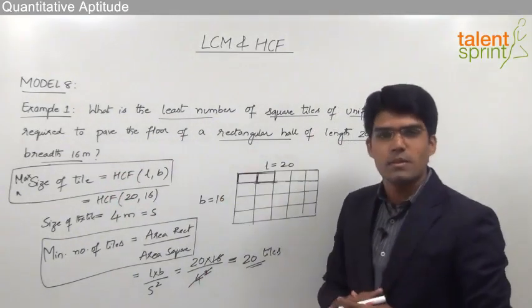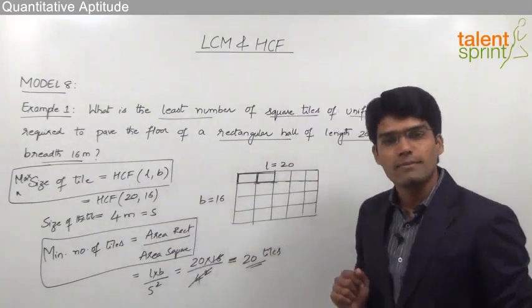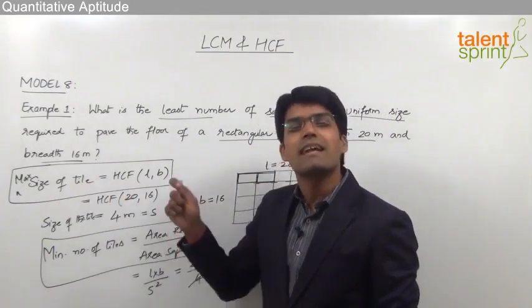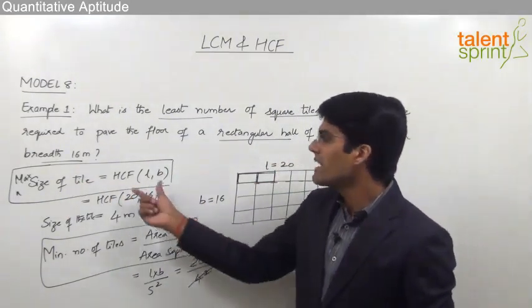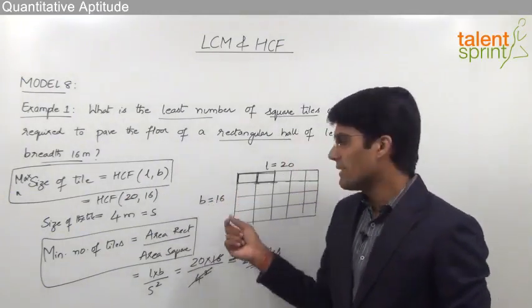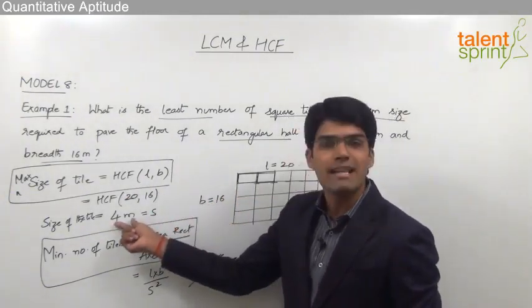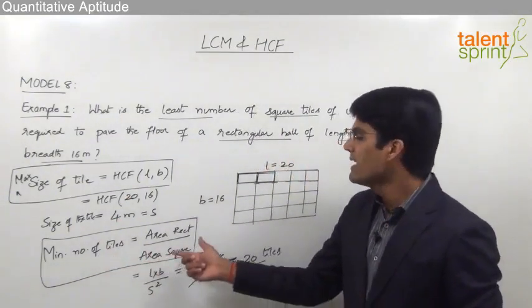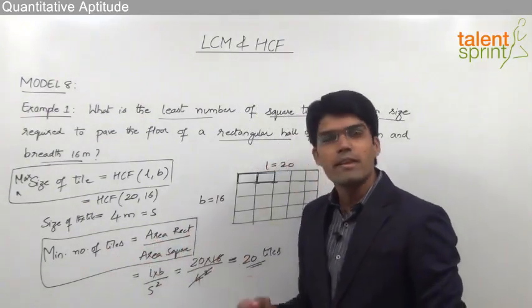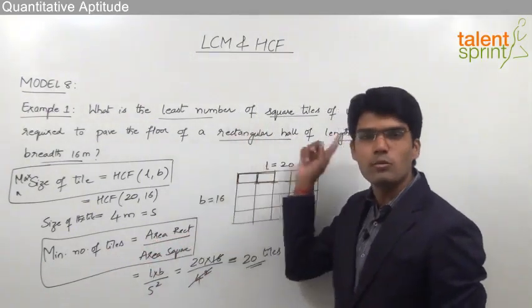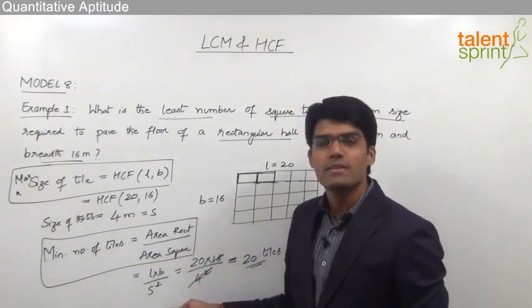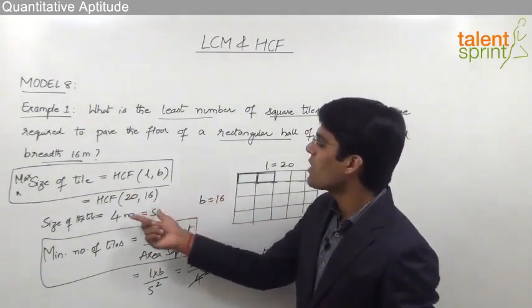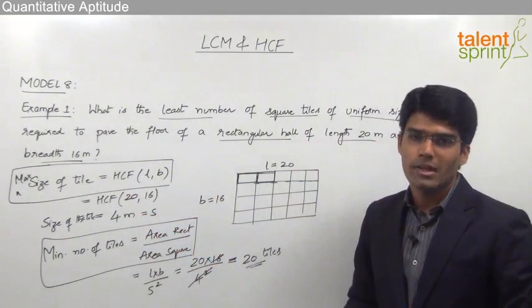So this is how we solve this question based on the concept of highest common factor. Two types of questions can be asked: either the maximum (largest) size of tile is required — which is the HCF of length and breadth, giving 4 meters — or the minimum number of tiles is required, which is the area of the rectangular floor divided by the area of each square tile (side squared).